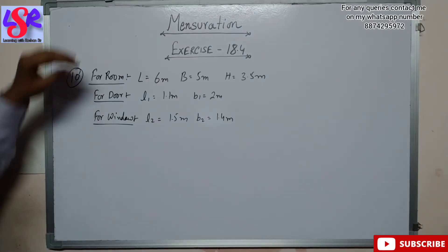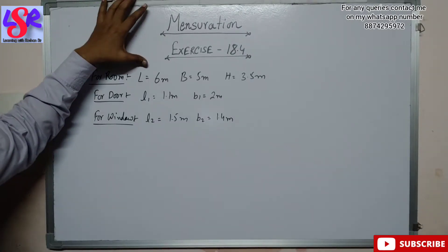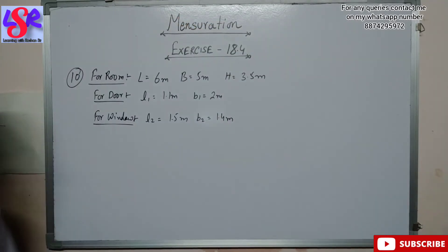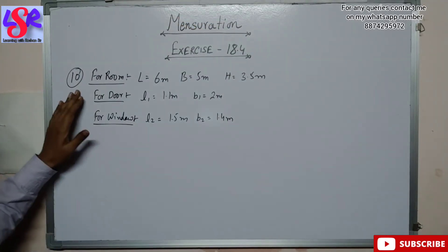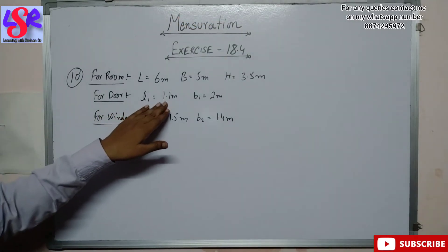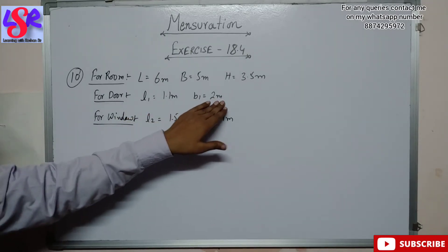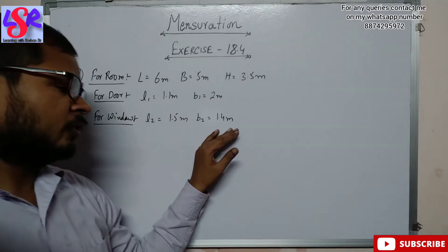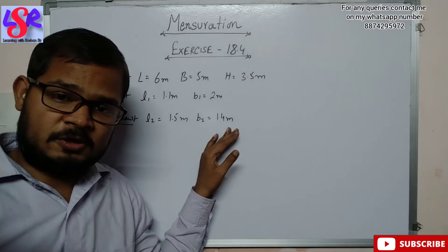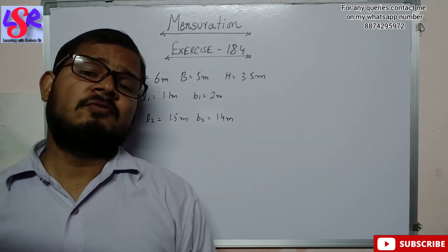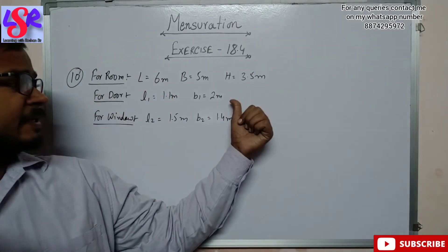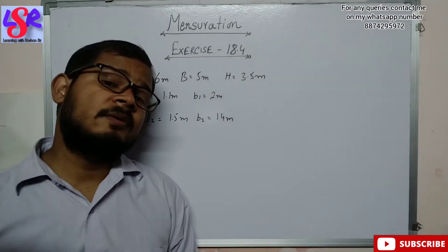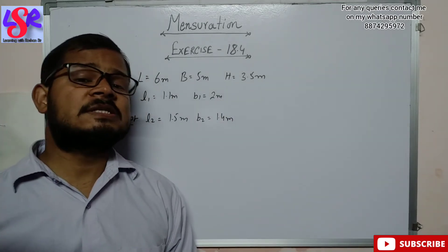Here the dimensions for the room are: length 6 meter, breadth 5 meter and height 3.5 meter. For the door we have 1.1 meter by 2 meter and for the window we have 1.5 meter by 1.4 meter. We have to whitewash the four walls excluding the two doors and three windows, and we also include the ceiling.